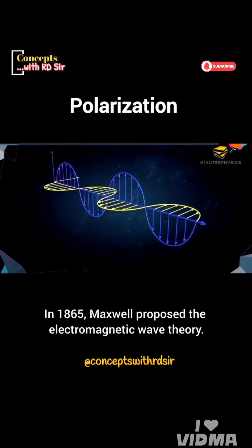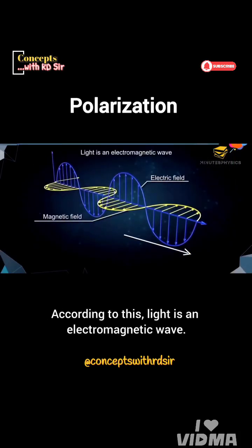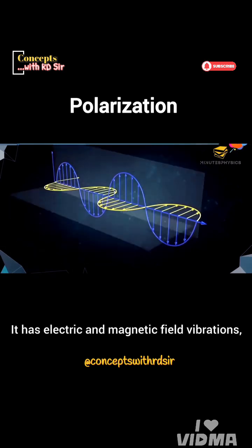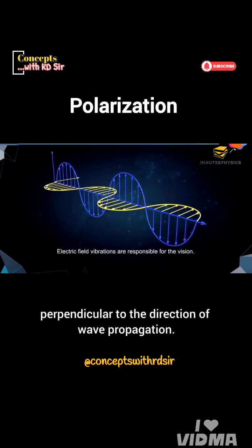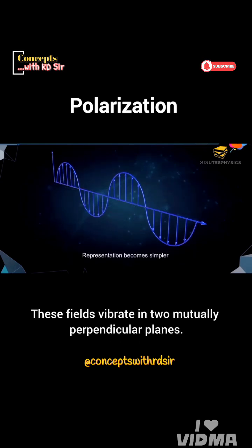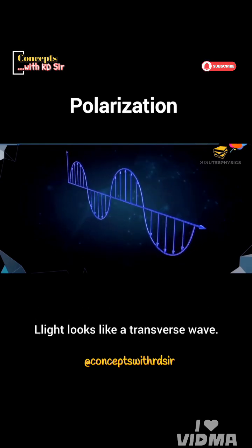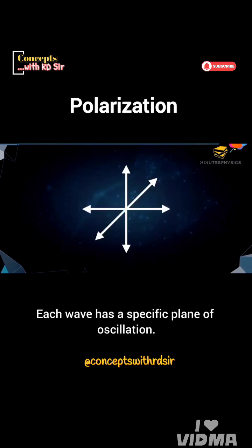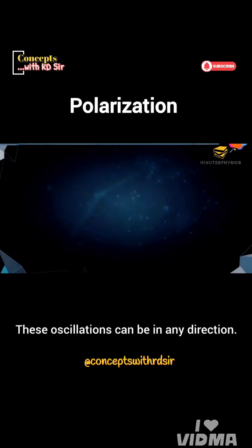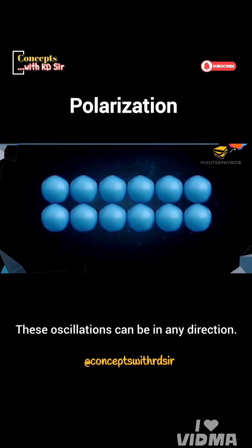In 1865, Maxwell proposed the electromagnetic wave theory. According to this, light is an electromagnetic wave. It has electric and magnetic field vibrations perpendicular to the direction of wave propagation. These fields vibrate in two mutually perpendicular planes. Light looks like a transverse wave, and each wave has a specific plane of oscillation. These oscillations can be in any direction.